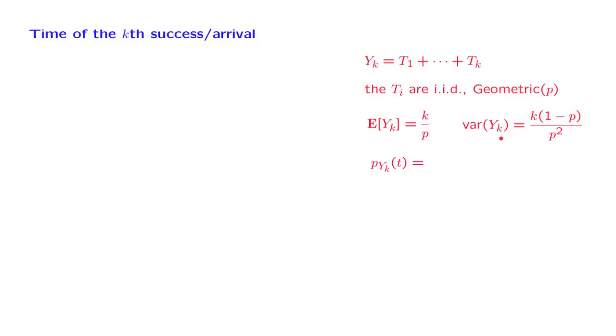Finally, we would like to calculate the PMF of yk. So we would like to find this probability here. The probability that yk takes on a specific value equal to t. Notice that in this argument, we're thinking of k as a fixed given number. For example, we're interested in the time of the fifth arrival.